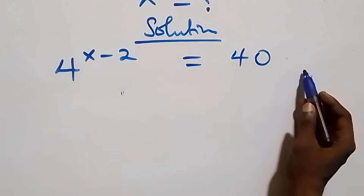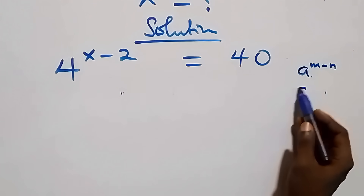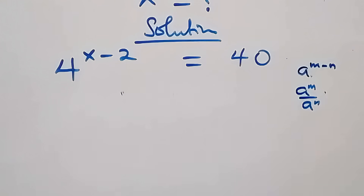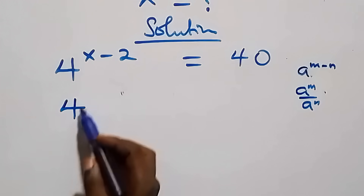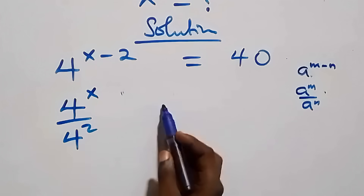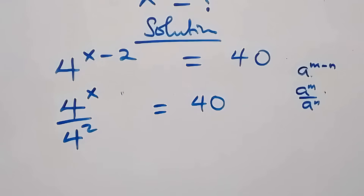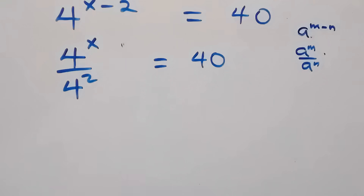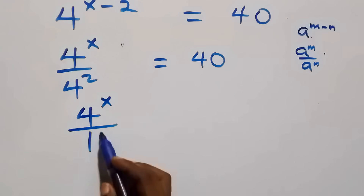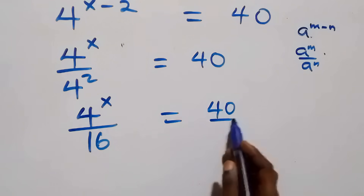This follows from the law that a raised to power m minus n is the same as a raised to power m over a raised to power n. So this becomes 4 raised to power x over 4 squared, which is 16, equals 40.